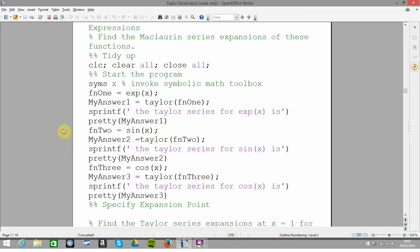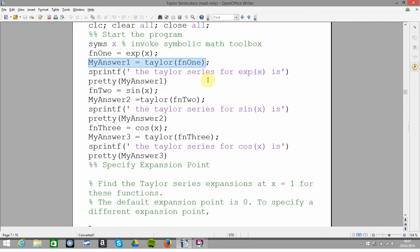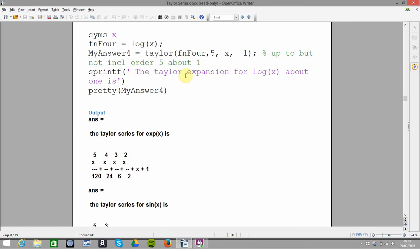So if we just look at 1 in particular on this line here, I've defined my function to be exp(x), and then on the following line I've got the Taylor, so the command is Taylor of fn1. I might skip the others for just a little bit, and then if I scroll down just where I'm here at the moment.